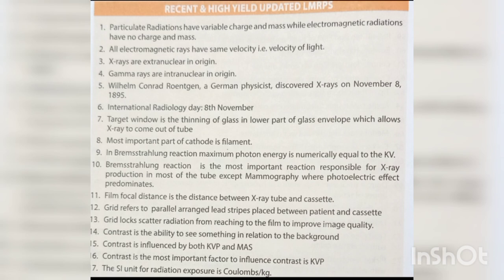Bremsstrahlung reaction is the most important reaction responsible for X-ray production in most tubes, except mammography where the photoelectric effect predominates. Film focal distance is the distance between the X-ray tube and the cassette.